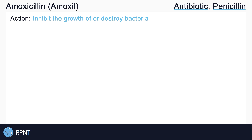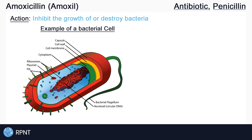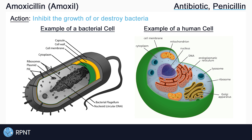Bacteria are single-celled or unicellular organisms that can cause disease and often look something like this. As you can see, bacteria have cell walls and cell membranes. This makes them different from human cells, which only have cell membranes and lack cell walls.